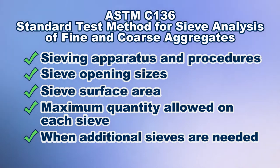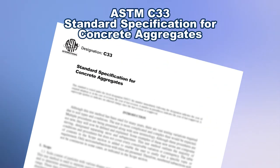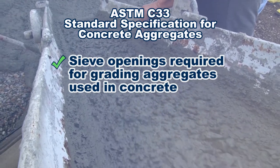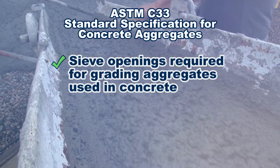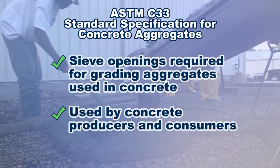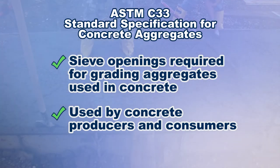Another ASTM standard that references ASTM C136 is the standard specifications for concrete aggregates, ASTM C33. This specification further defines the sieve openings required for grading of fine and coarse aggregate used in concrete production, and is meant to be used by contractors and concrete suppliers as part of the purchase document describing the concrete material to be furnished.